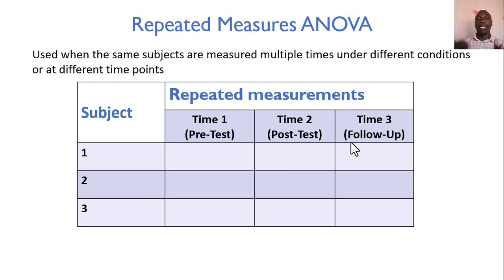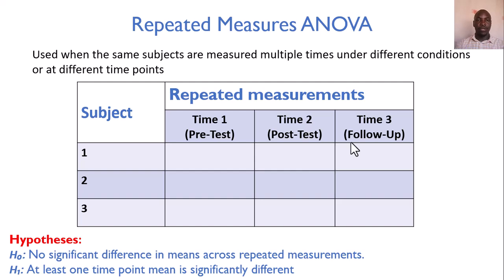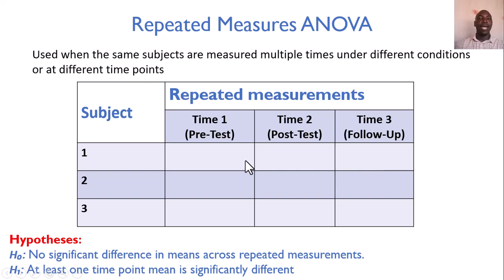That's when repeated measures ANOVA comes in — you have repeated measurements for the same participants. The null hypothesis states there is no significant difference in means across repeated measurements; in other words, the mean at each time point would be the same, meaning the intervention has no effect on what you're measuring. The alternative hypothesis states that at least one time point mean is significantly different.